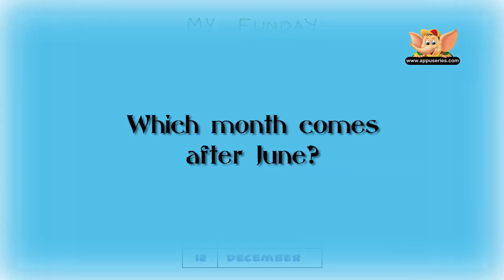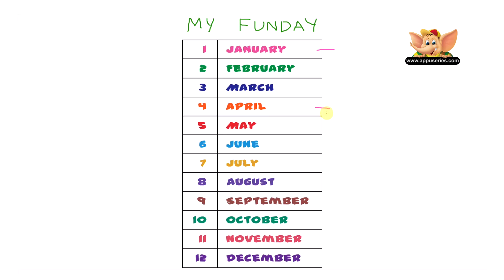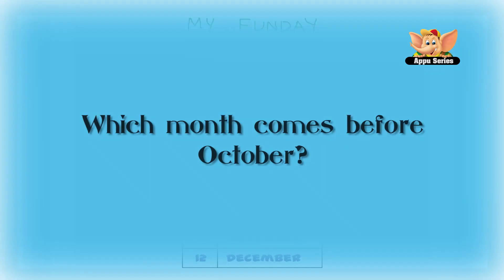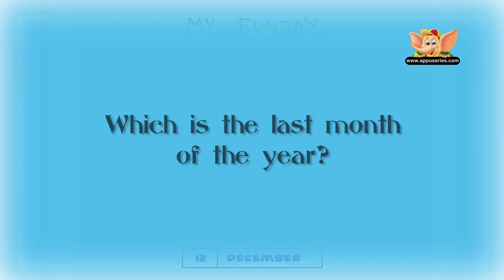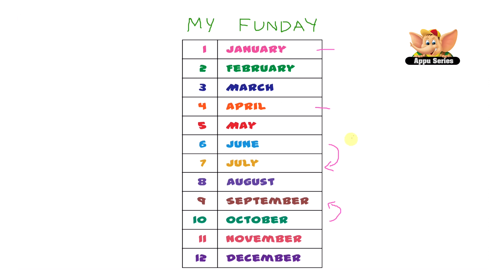Which month comes after June? Let's find June on the chart at number six. The month after June is July. Which month comes before October? Going to number 10, which is October, the month before that is September. Which is the last month of the year? At the end of the chart, number 12, December is the last month of the year.